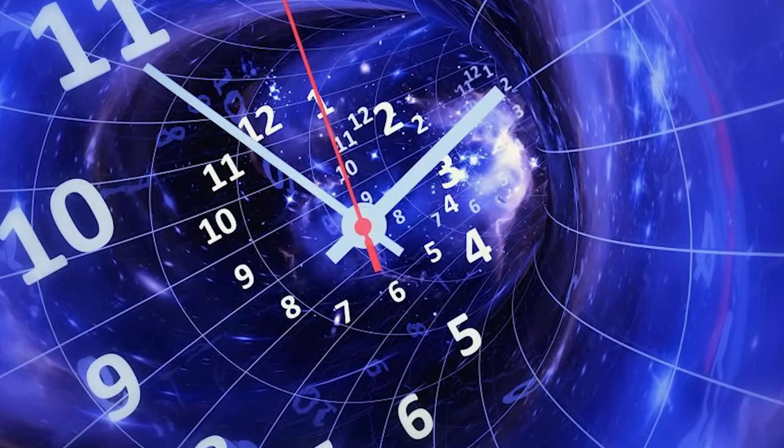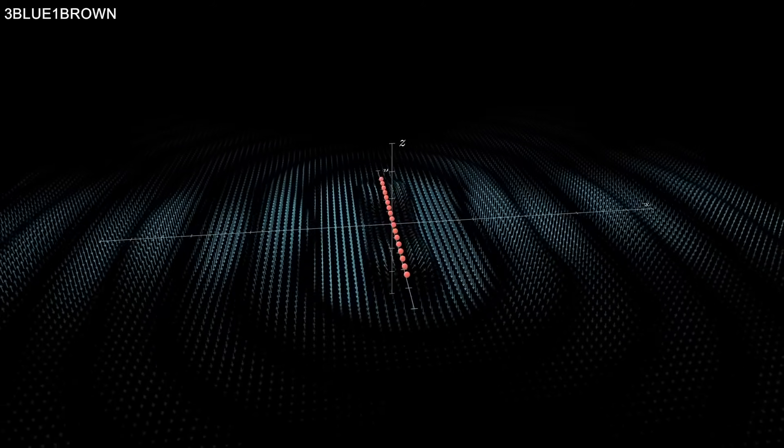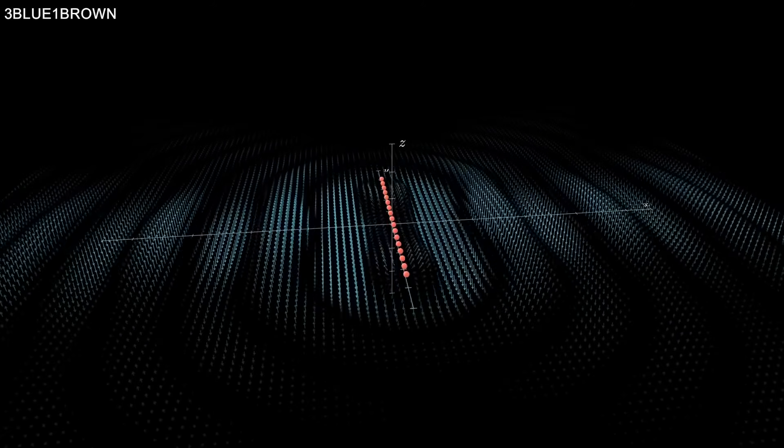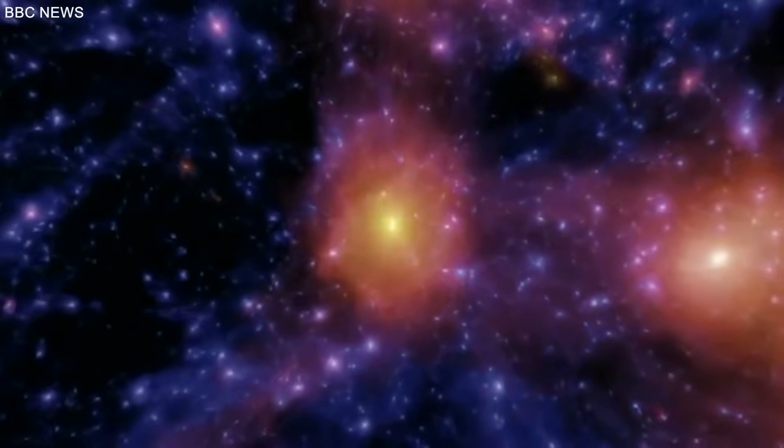A clock on Earth ticks differently than one orbiting. Time, once rigid and unchanging, was now elastic. But even Einstein's theory regards time as a smooth, flowing continuum, a universal thread.